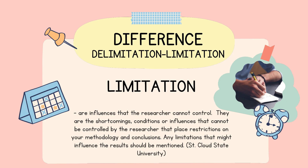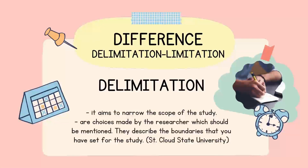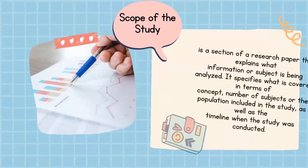As researchers, we set delimitation beforehand. On the other hand, limitations are beyond our control — these are things we are not expecting to happen but still happen. Delimitation is placed in Chapter 1, or sometimes in the methodology section, while limitation is written and mentioned in the final section of the study, usually in the results and discussion.